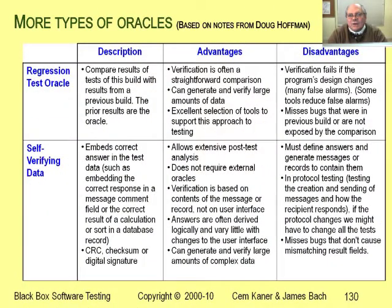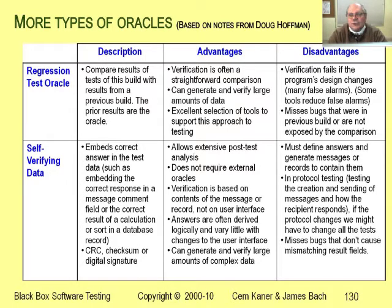A regression test is a repeat. We ran the test in a previous build of the program, and now we're running it again. If the program passed the test the last time, we can capture its output and compare the old output with the new output. If the output is different this time, maybe the new output is wrong — or perhaps the old output is outdated.